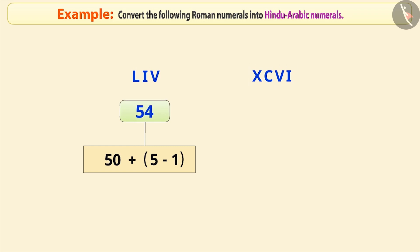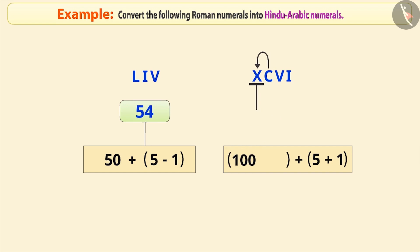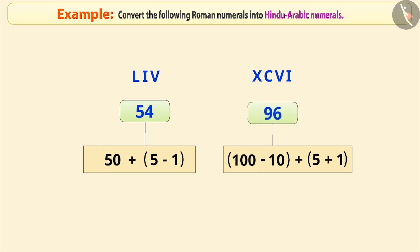Now consider this Roman numeral. This symbol represents 1. After this, there is a larger symbol of 5 which must be added. The next symbol represents 100. Since this is also a larger value, it must be added. Next is the symbol of 10 which is of smaller value, so it must be subtracted. Therefore, the result is 96.